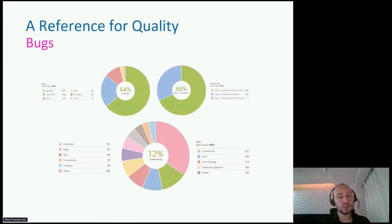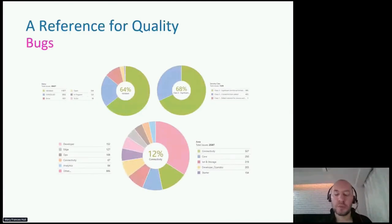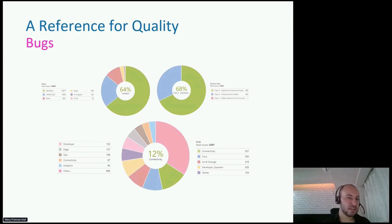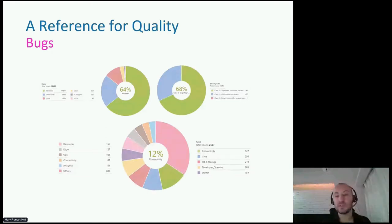We may also monitor the distribution of bugs among the components of the system on which they accumulate. For example, if most bugs heap together on a specific component, we can understand there is a quality issue on that specific component or subsystem and take action items to improve quality on that part. Or we can monitor the distribution of bugs according to their ages — how old they are, for how long they are open and still not resolved. In this way we can understand at what pace we are resolving them and how capable we are to immediately resolve issues. There is lots of valuable information underlying the bugs.